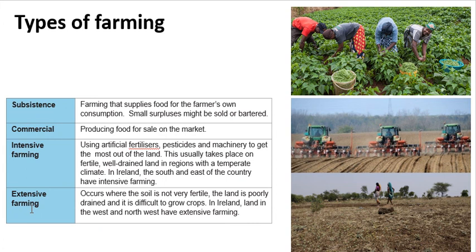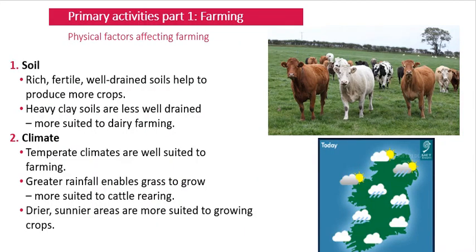Extensive farming occurs in areas where the soil is not very fertile, such as the north and northwest of Ireland. For example, if you're a farmer in the west of Ireland with 40 boggy, infertile acres, you'd have to farm all of it every year to make any money. Whereas with good fertile land in the east, you might farm 30 acres and let the remaining 10 acres recover. So extensive farming means using all your land because it's poor quality.